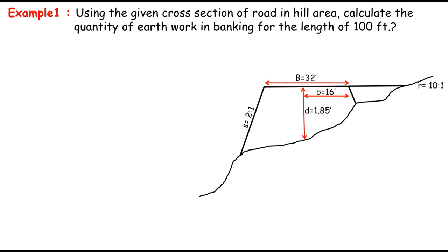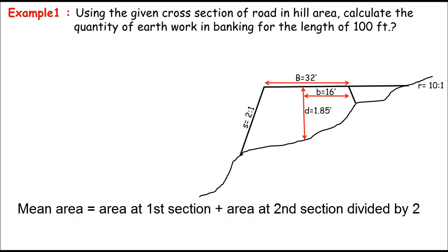The only one cross section is given over here. So we'll just calculate the cross section area that's in filling. And then we'll multiply the cross section area with the length of the road. So we can get the total filling of this section. That's so simple.